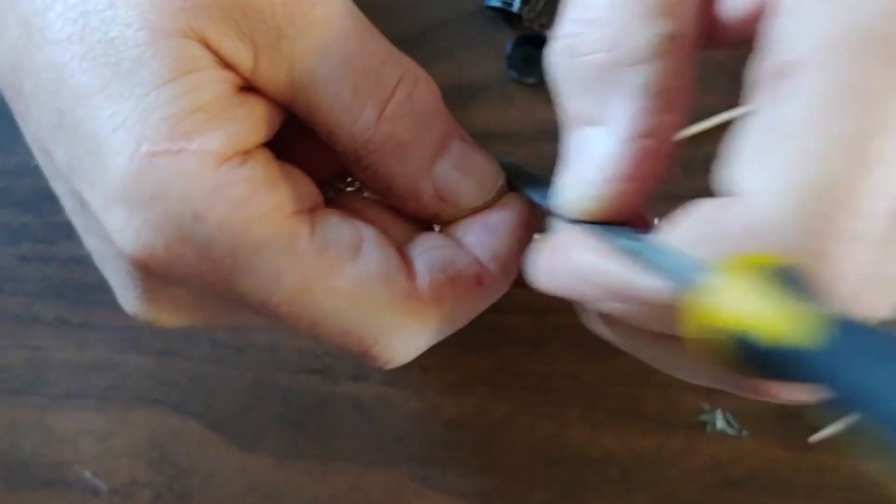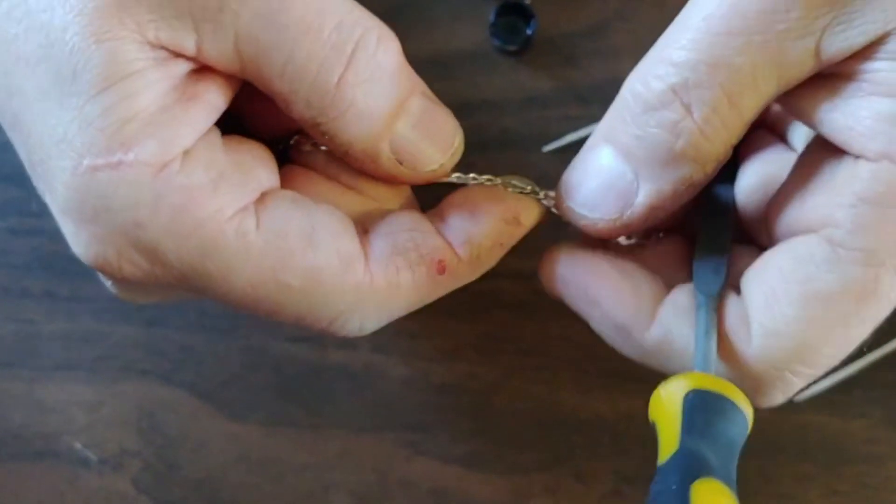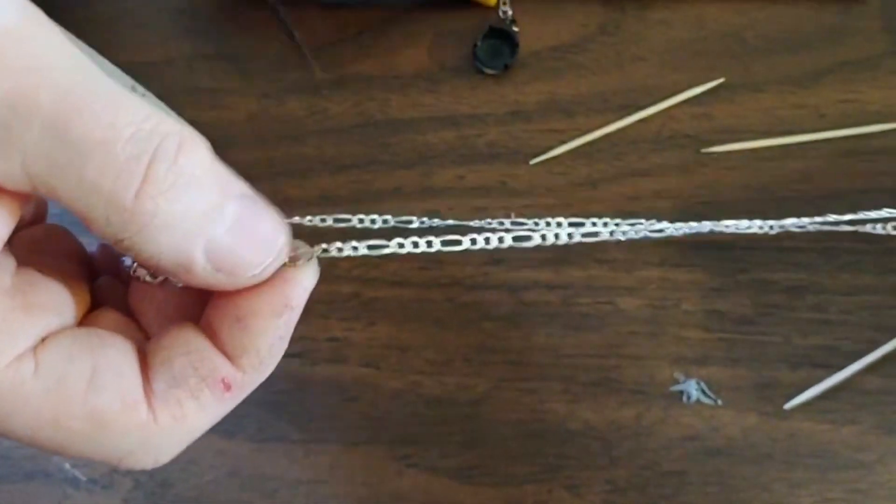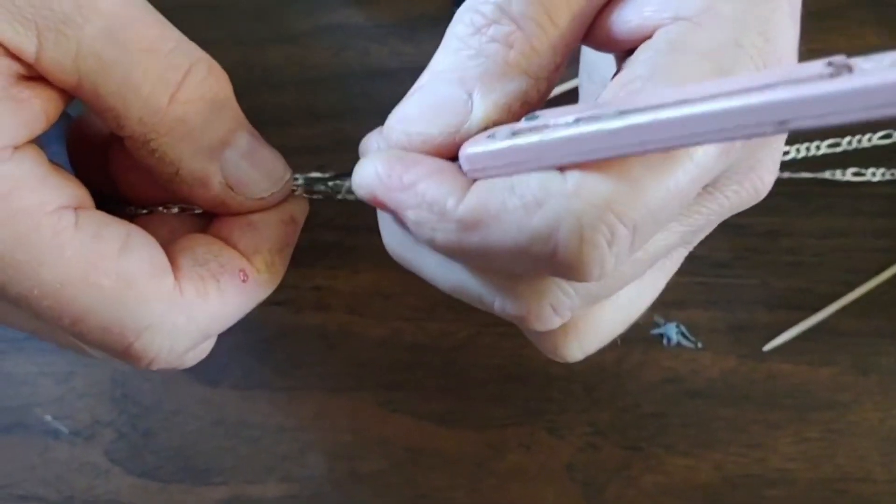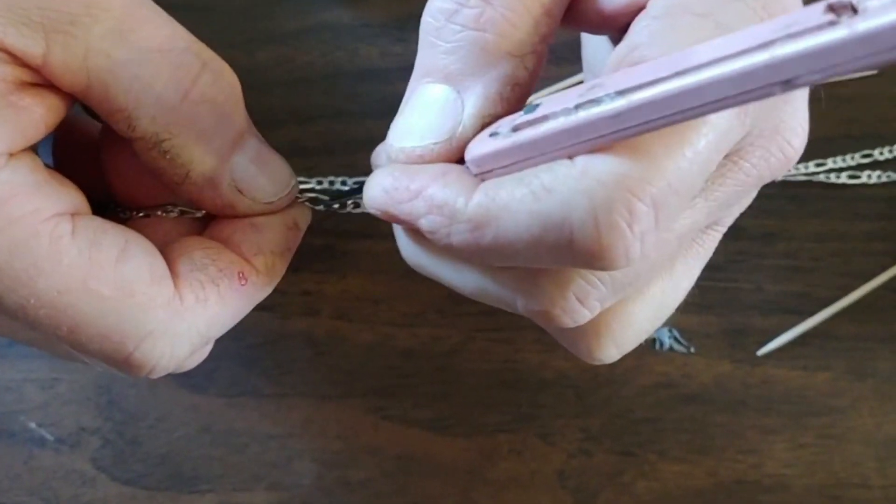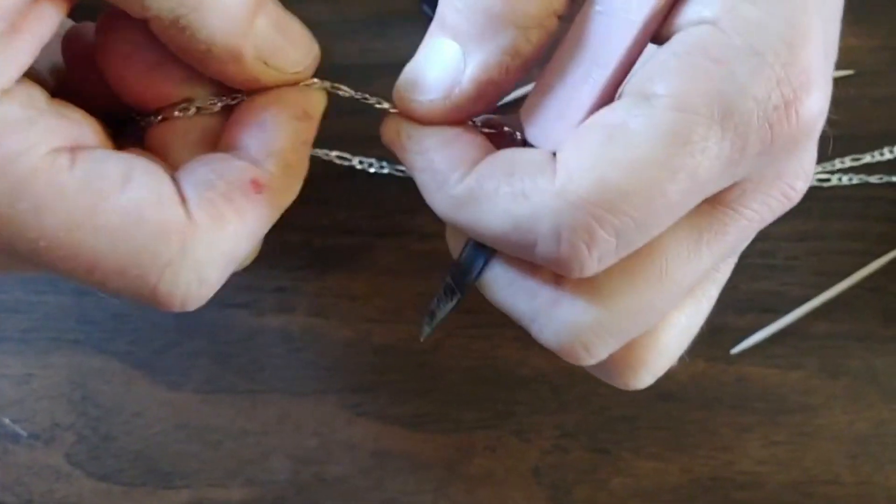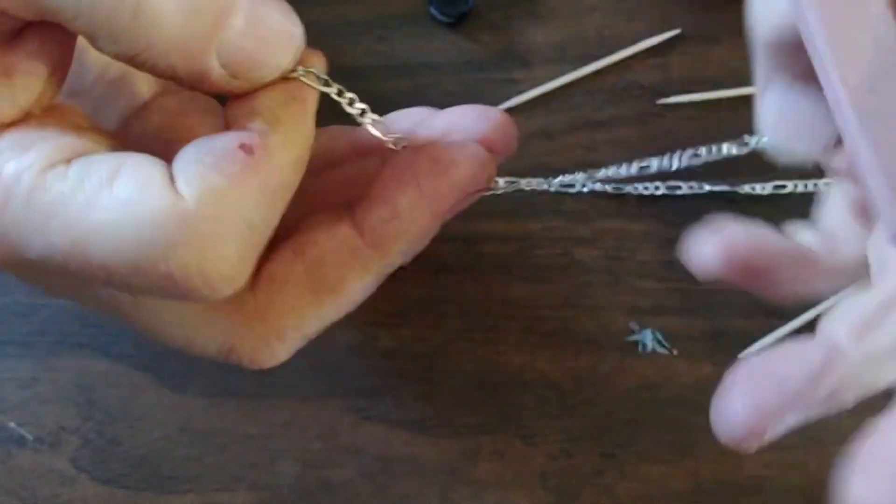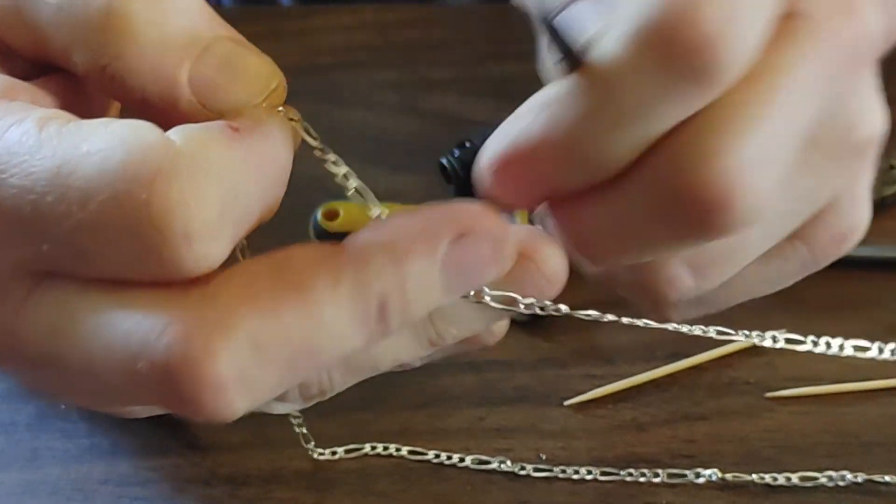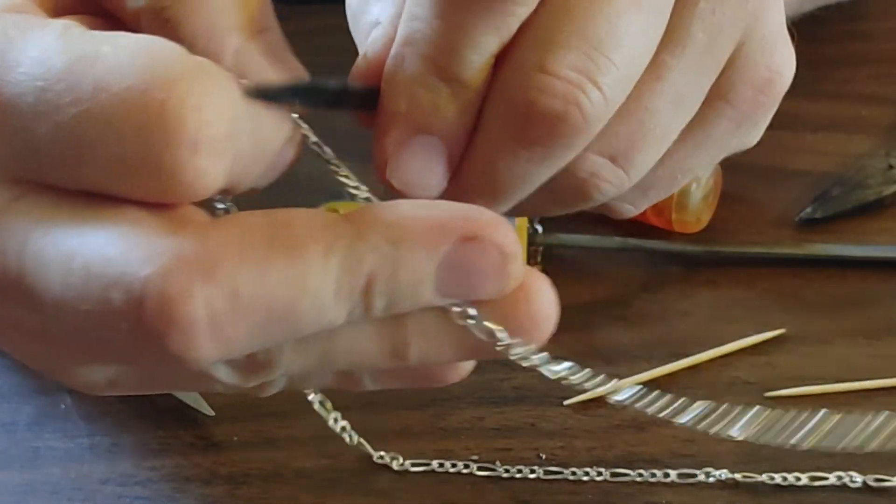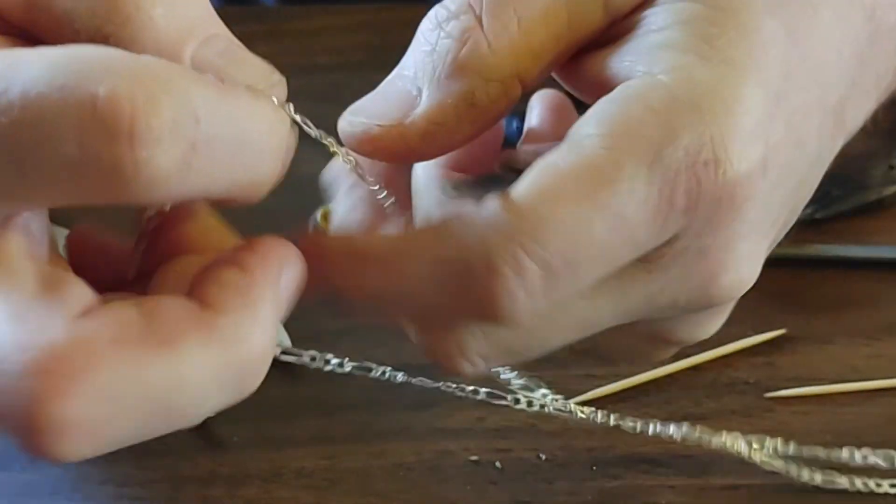After filing, you can use the pen knife to remove burrs on the interior of the link. Check your work as you go. The pen knife is also good at scraping any excess material off the outside of the link. Make sure to check both sides of the link as you progress.